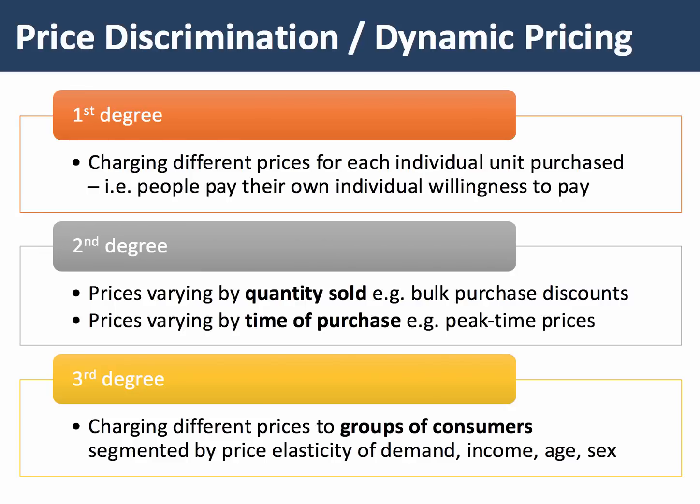Third-degree discrimination involves segmentation of the market and charging a different price for the same good or service to different groups of consumers. They might be segmented by their elasticity of demand, by their income, by their age, by their gender, by their ethnicity, or by any salient discriminatory tactic.